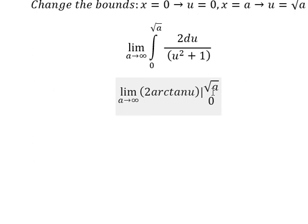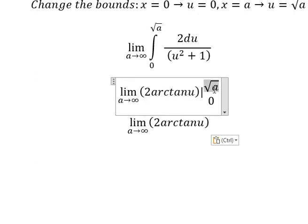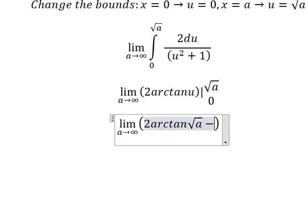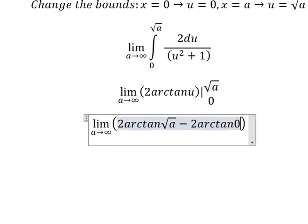Now we evaluate at the bounds. We know that arctan of 0 equals 0.